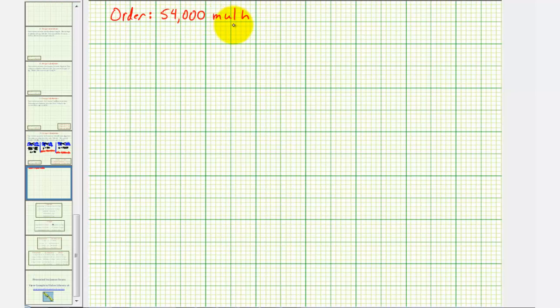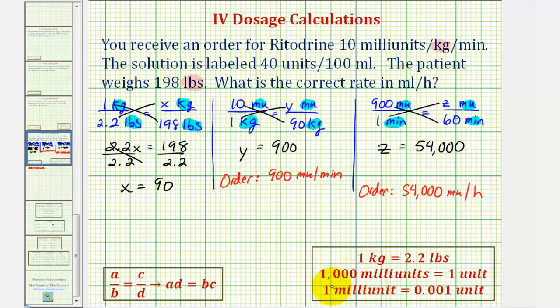Again, now we're going to convert milliunits to units. Going back to the previous slide just for a moment, notice how 1,000 milliunits is equal to one unit. So this will give us the left side of the proportion: 1,000 milliunits is to one unit as 54,000 milliunits is to an unknown number of units, we'll say a units.